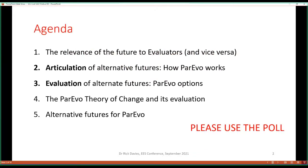The agenda is: first, I'll talk about the relevance of the future to evaluators and vice versa. Then I'll talk about the articulation of alternative futures — how you do that using this free web app called ParEvo. Then I'll move into how you evaluate those alternative futures once articulated. Then I'll talk in more detail about the theory of change embedded in the design of the ParEvo app, and at the end I'll make suggestions about how the ParEvo app might develop in the future — its own alternative futures.